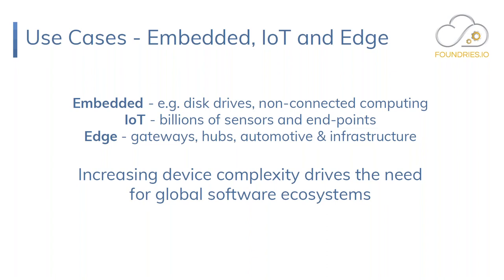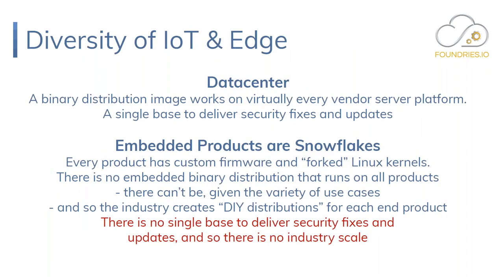But once you start looking at bigger markets and connected computing, you have increasing device complexity and need global, scalable software ecosystems — for IoT with billions of sensors and endpoints, edge gateways, automotive infrastructure, and server/high-performance computing. In the data center, a binary distribution image works on pretty much every vendor server platform. You can get Red Hat as a binary and it will run on any Intel-based or AMD-based server — it's a single source code base that can deliver security fixes and updates.